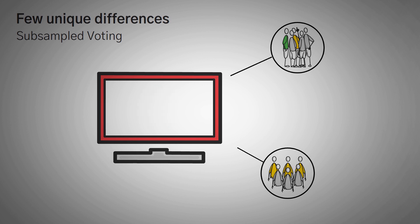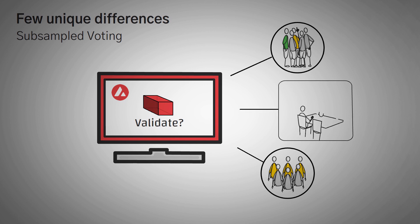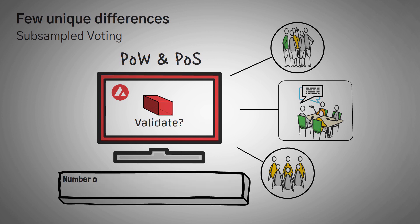To put it in their own words, small random subsets of validators are asked whether they think the transaction should be accepted or rejected. After it is initially thought to be valid, something called network gossip happens, where the participants exchange information back and forth and continue to validate the transactions or deny them. One of the benefits of this is that contrary to proof of work and proof of stake mechanisms, it doesn't matter how many nodes or people there are in the system — consensus will be reached within a certain desired time frame.